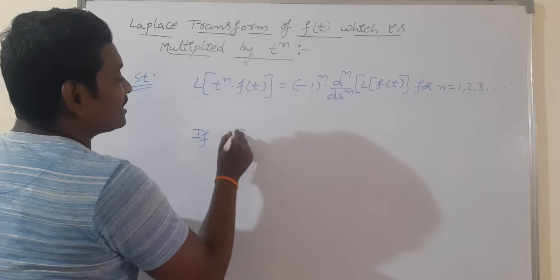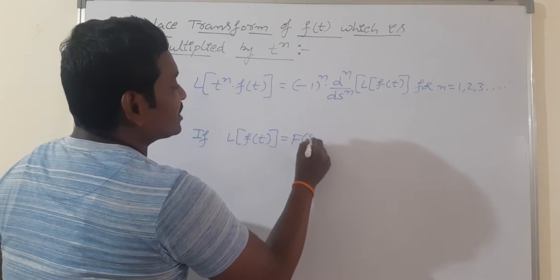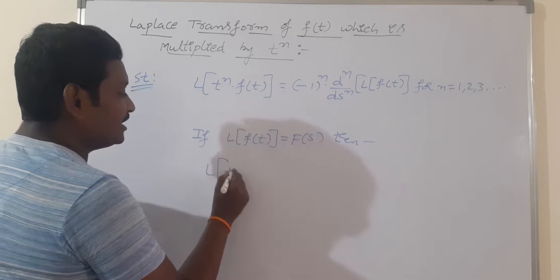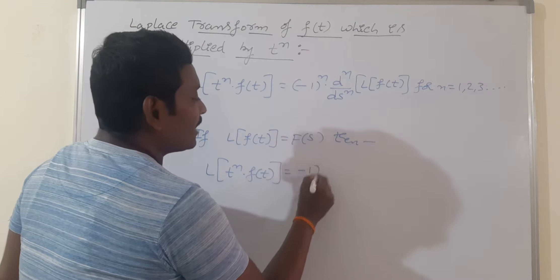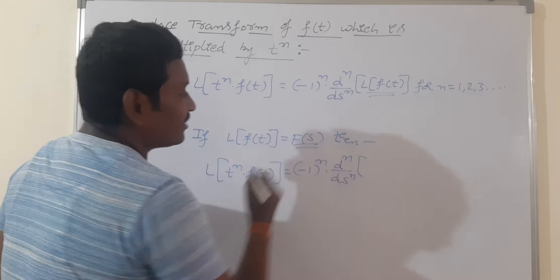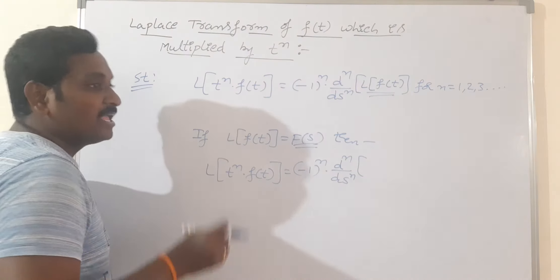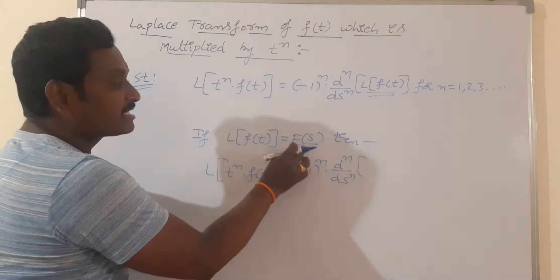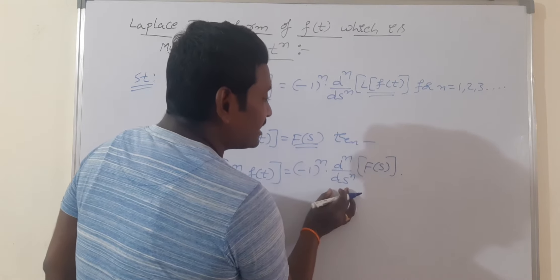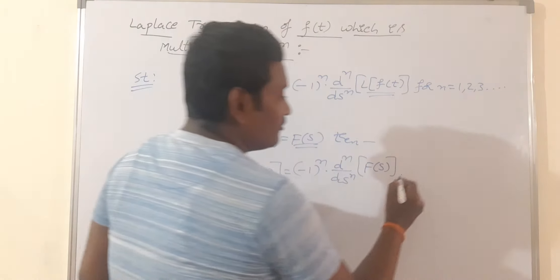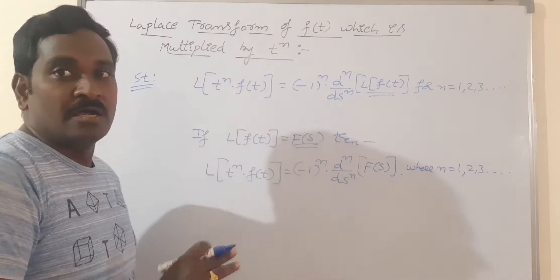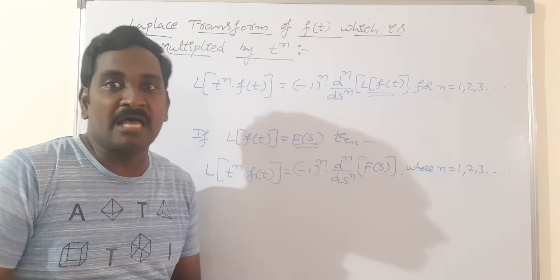If we denote the Laplace transformation of f(t) as F(s), then the above statement becomes: L{t^n · f(t)} = (-1)^n · d^n/ds^n of F(s). If we find the Laplace transformation of a function of t, the result should be in terms of s — that is why we replace L{f(t)} with F(s). You should take n derivatives of F(s) with respect to s, where n must be a positive integer: 1, 2, 3, etc.